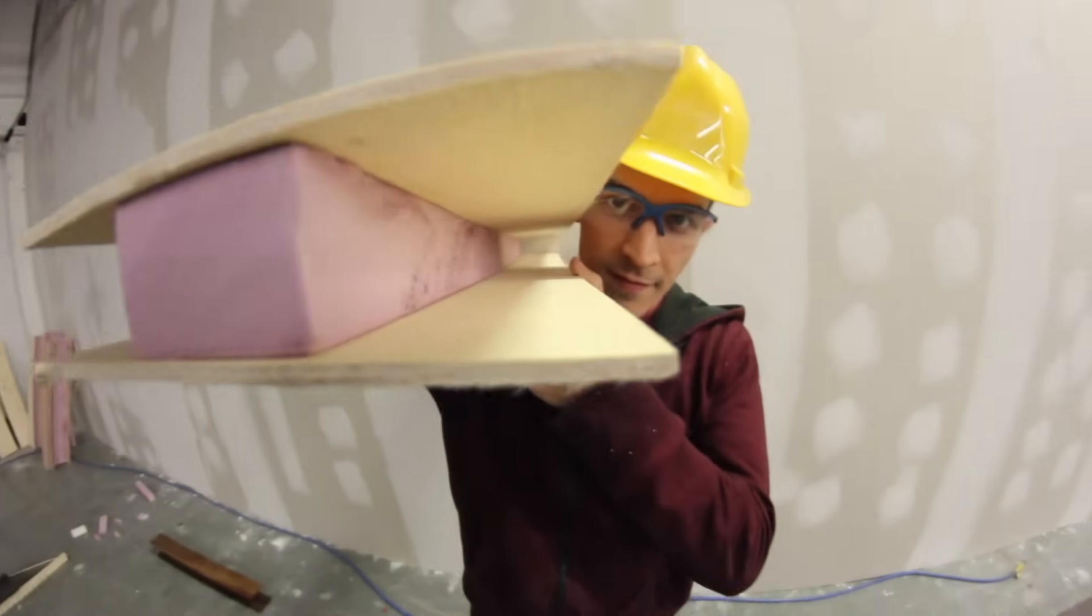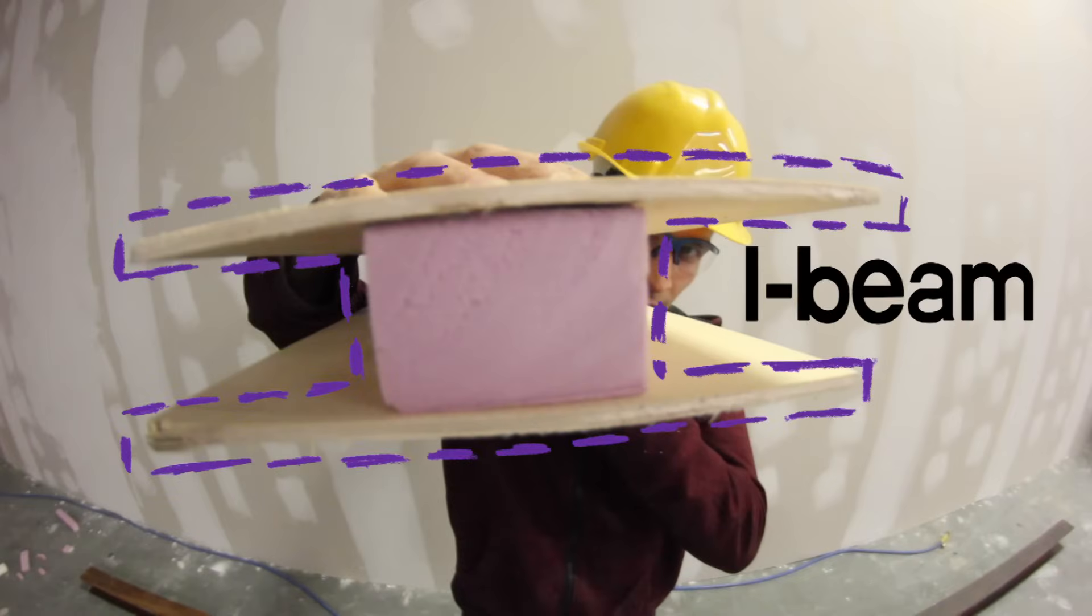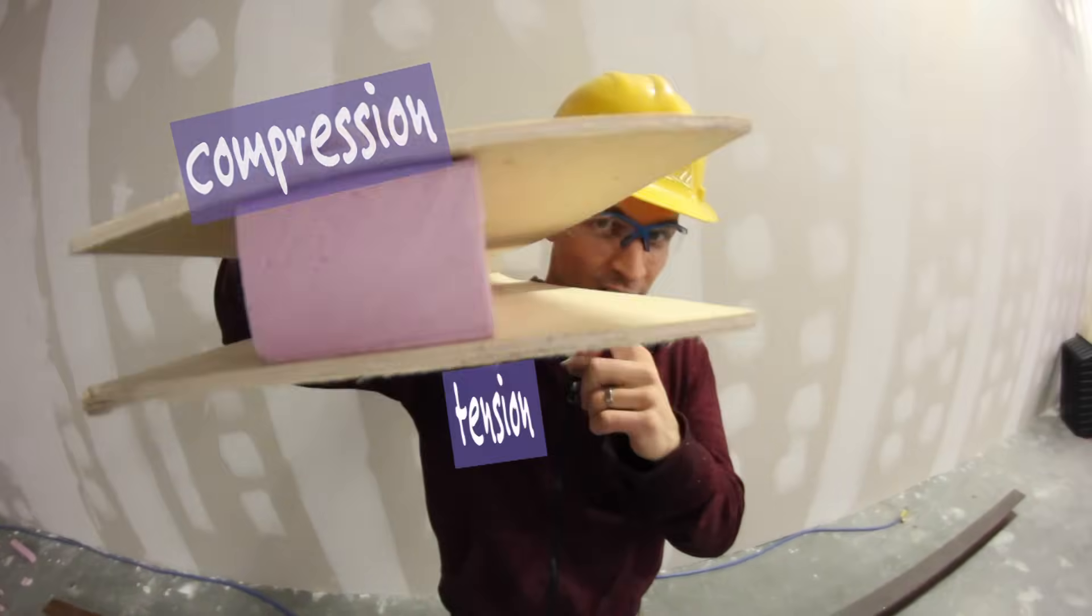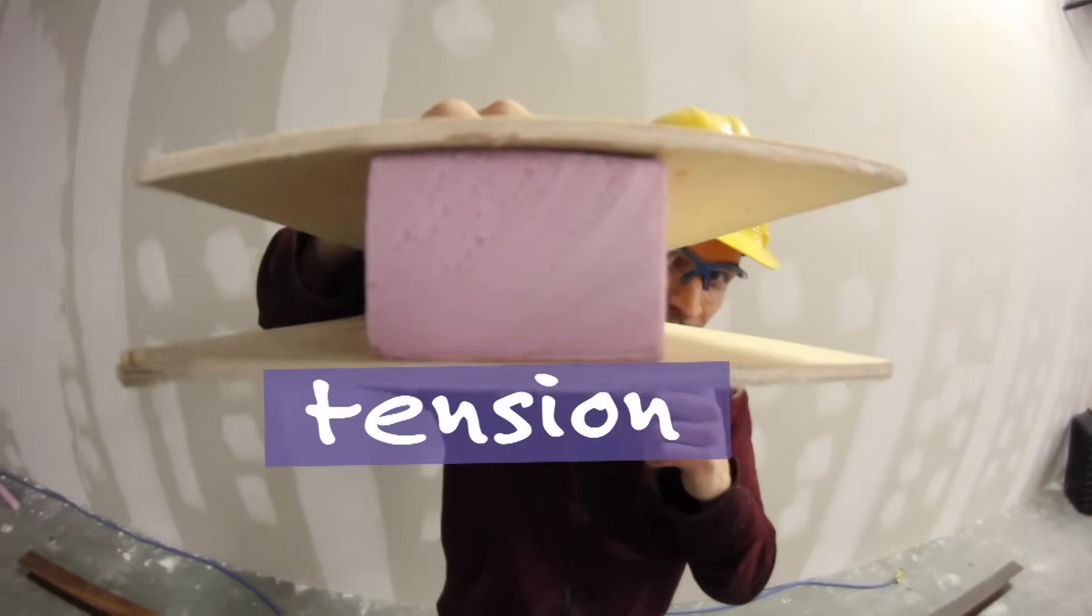So I've taken the two pieces of plywood and styrofoam in the middle and built an I-beam out of it so that the plywood can do what it does best. Take compression on the top and take tension on the bottom. Hopefully, it'll hold my weight.